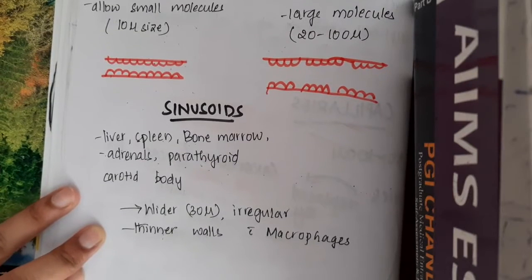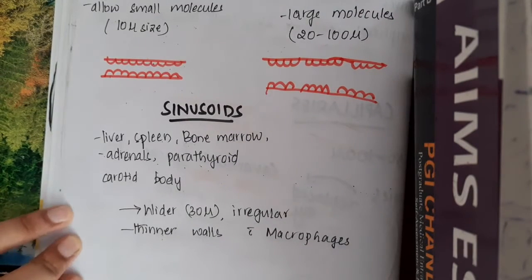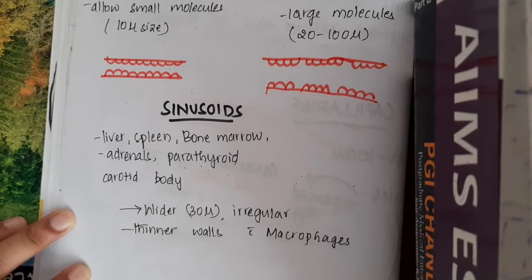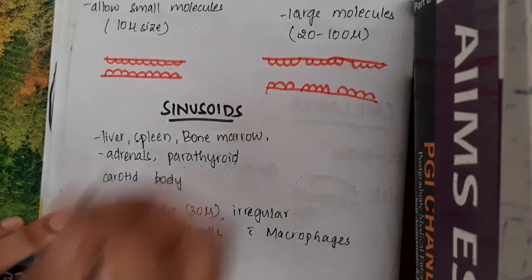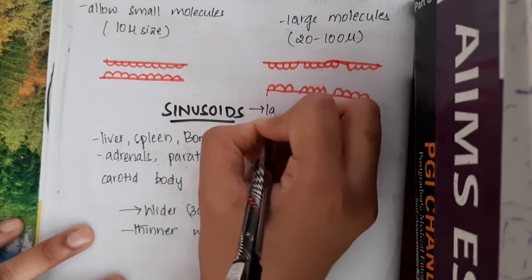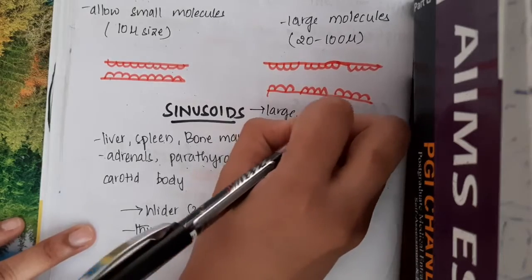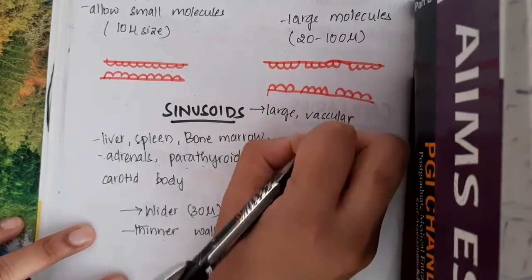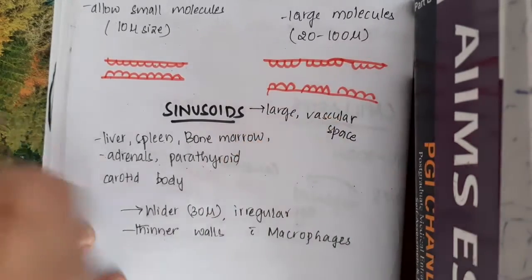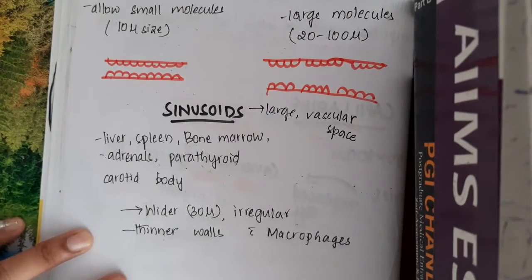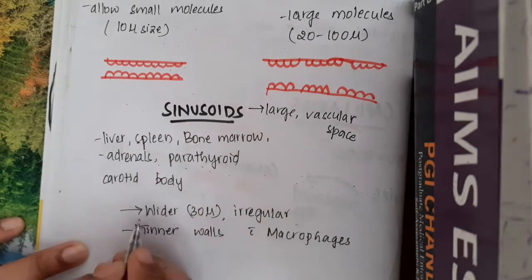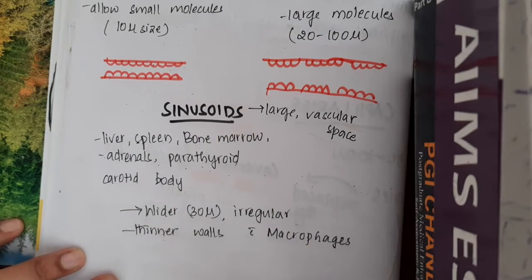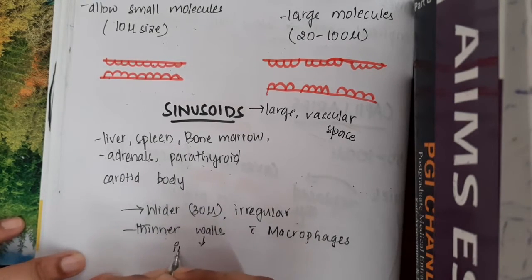We also have sinusoids, which are similar to cavernous spaces. They are large, irregular vascular spaces surrounded by the parenchyma of the organ. These sinusoids are wider and irregular, and they have thinner walls that are sometimes incomplete.